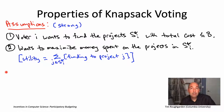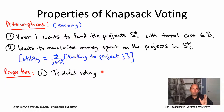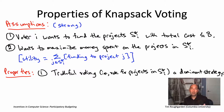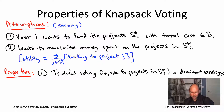The first nice property is truthfulness — a guarantee analogous to what we had for the Vickrey auction. Given our assumptions, there's a natural notion of truthful voting: voter I votes for exactly the projects in S* I, without withholding any votes for projects it likes or giving votes to projects it doesn't like. Truthful voting is a dominant strategy. It's not so hard to formally argue this, but here is the intuition.